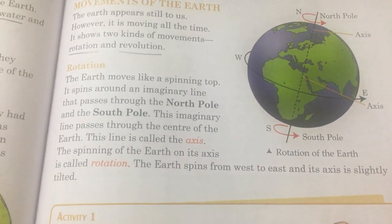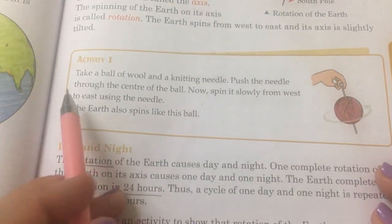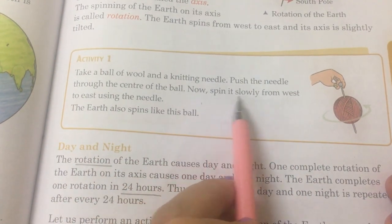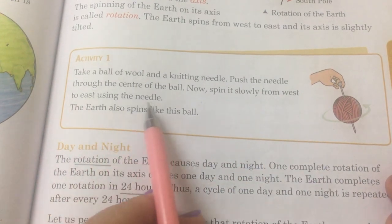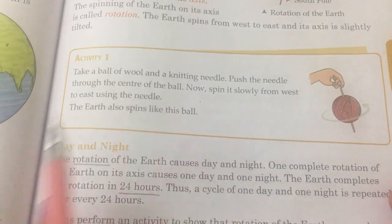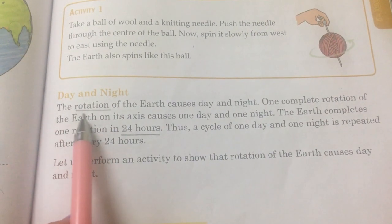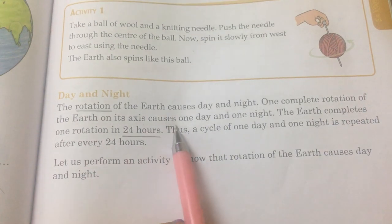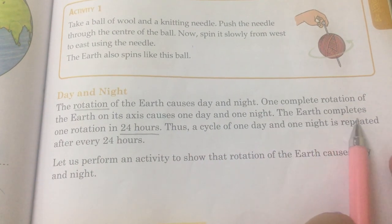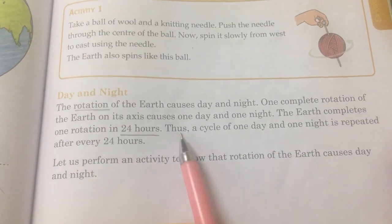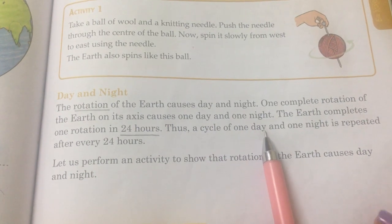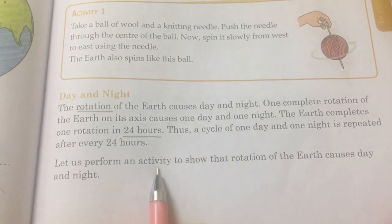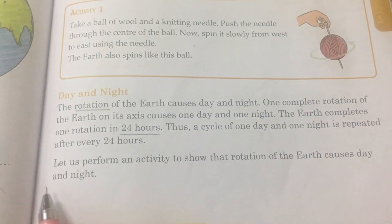Activity 1: Take a ball of wool and a knitting needle. Push the needle through the center of the ball. Now spin it slowly from west to east using the needle. The earth also spins like this ball. The rotation of the earth causes day and night. One complete rotation of the earth on its axis causes one day and one night. One day and one night is repeated after every 24 hours.